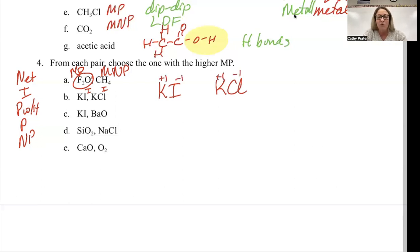That's not going to explain why one is held more strongly together than the other. So the next thing I look at is the size of the ions. Potassium is obviously the same size as potassium.